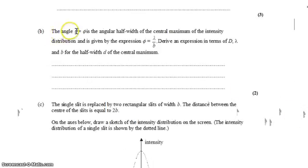Now, we're told about the angle when theta equals phi, the angular half-width of the central maximum of the intensity distribution. We're told that we can calculate the angle phi by dividing the wavelength by the width of the slit.